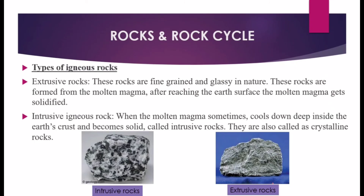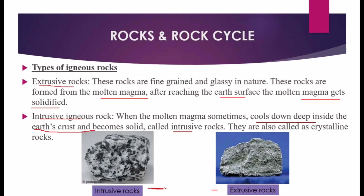There are two types of igneous rocks: extrusive and intrusive. Extrusive rocks are fine-grained and formed from molten magma that reaches the Earth's surface and solidifies. Basalt found in the northwestern part of Peninsular India is an example. Intrusive rocks form when molten magma cools deep inside the Earth's crust and becomes solid; they are also called crystalline rocks. Intrusive igneous rocks are further divided into deep-seated plutonic rocks and those formed at shallow depths, called hypabyssal rocks.